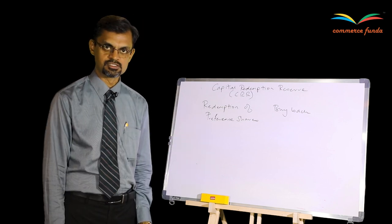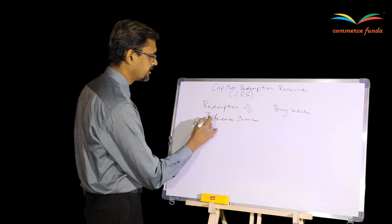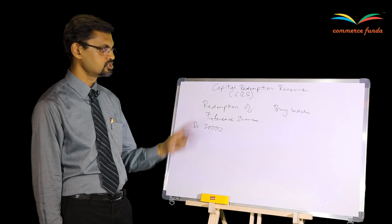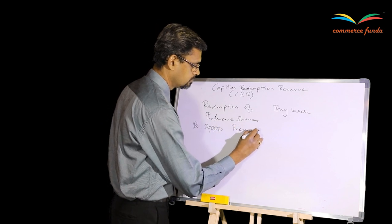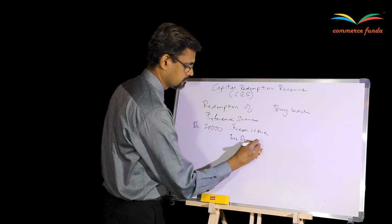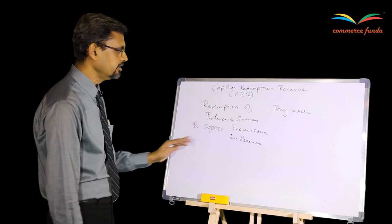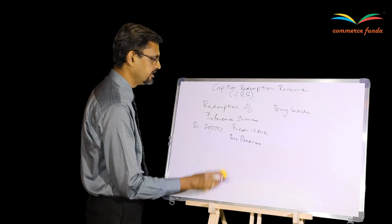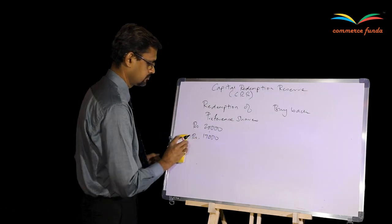Let me give a simple example using small numbers. You are redeeming preference shares of ₹20,000. As per the Companies Act, there are two sources of redemption of preference shares: one is fresh issue of new shares, and the other is free reserves. Free reserves are reserves which are available for dividend distribution. If ₹20,000 worth of preference capital is to be redeemed and the company has free reserves of say ₹17,000...